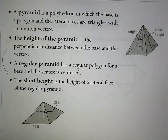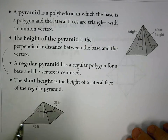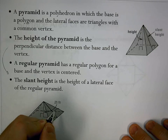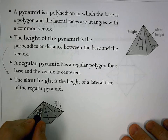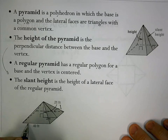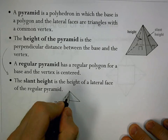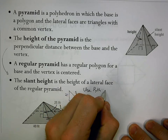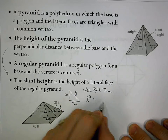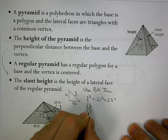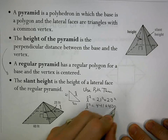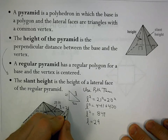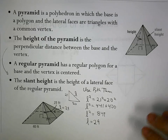What if they give us the height when we need the slant height? We form a right triangle where the slant height is L. For example, with height 21 and half the base being 20 (half of 40), we use the Pythagorean theorem: L² = 21² + 20² = 441 + 400 = 841, so the slant height is 29.